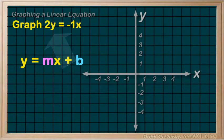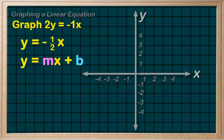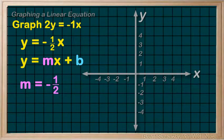So let's do one extra step to get it into that format. First of all, let's divide by two. So on the left we now have y equals, and on the right we have negative one over two x.